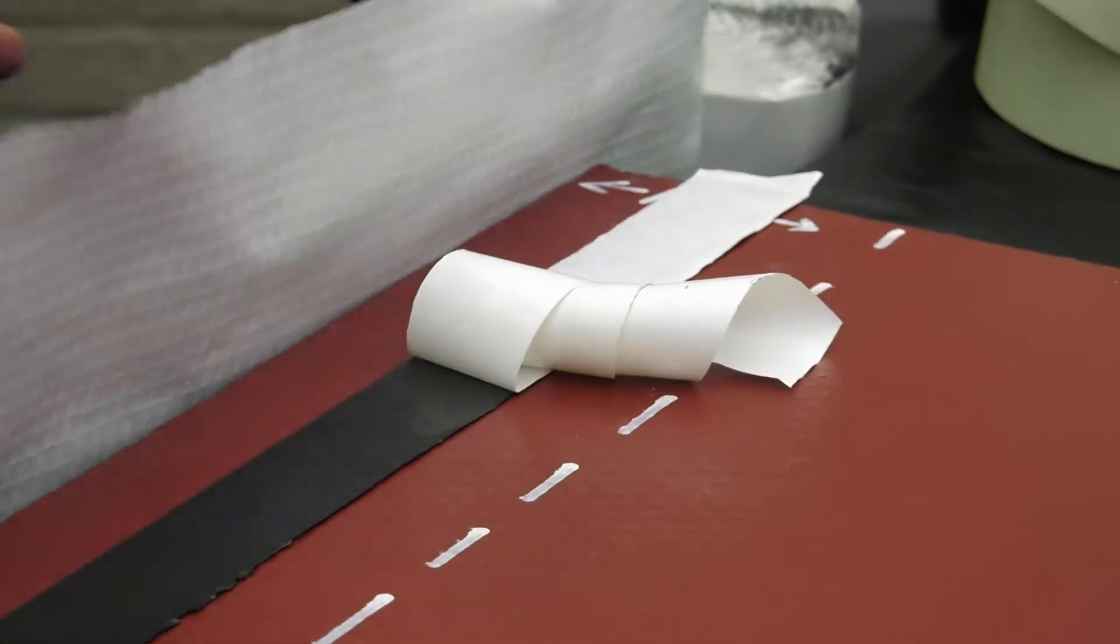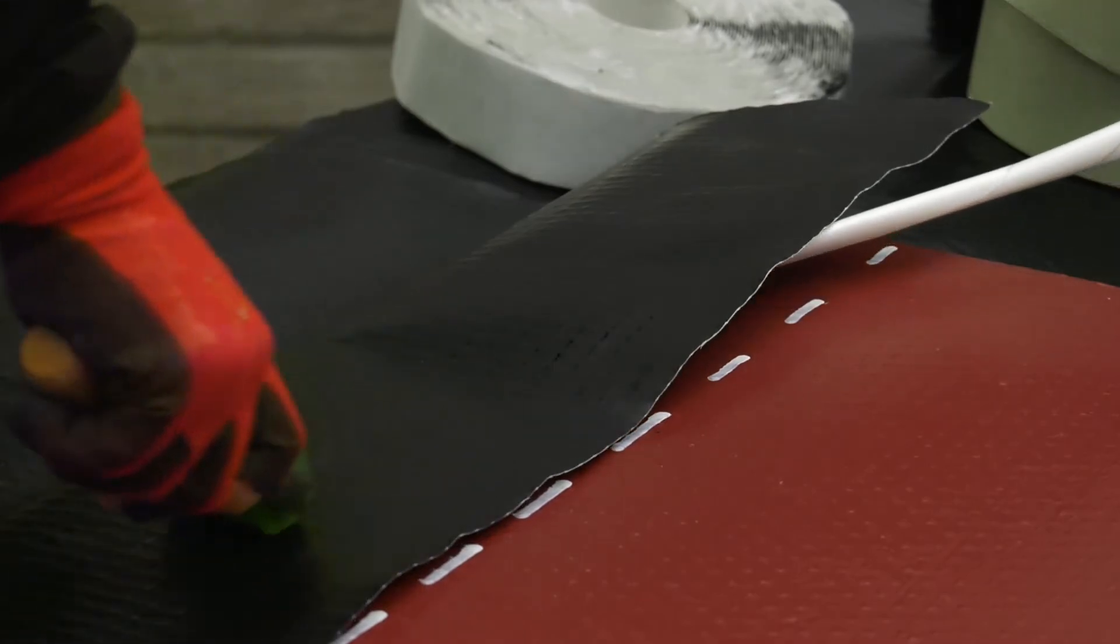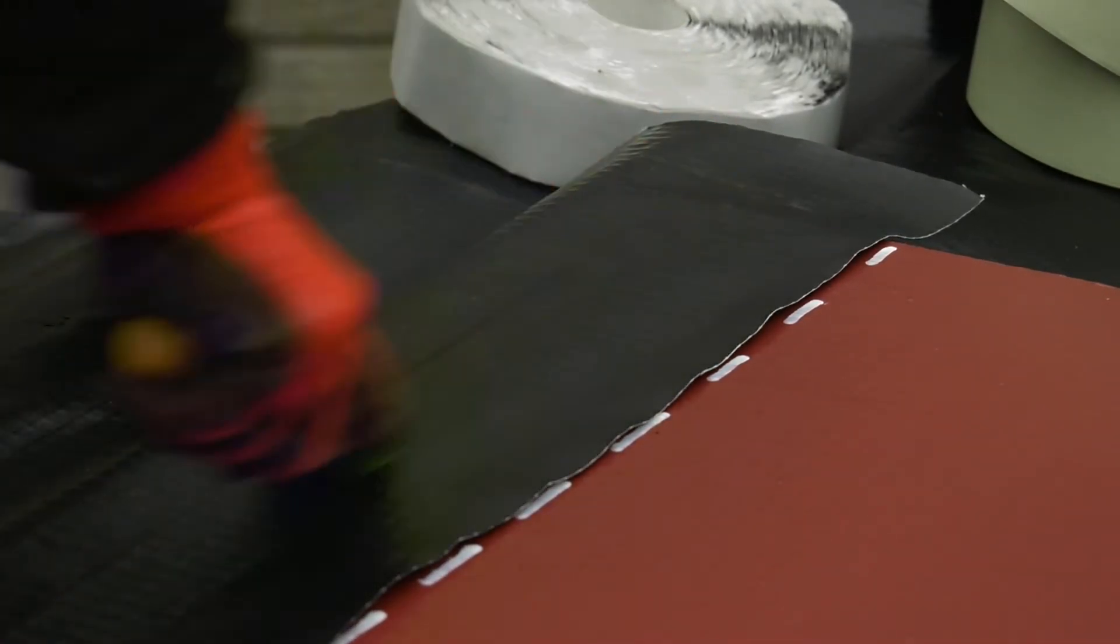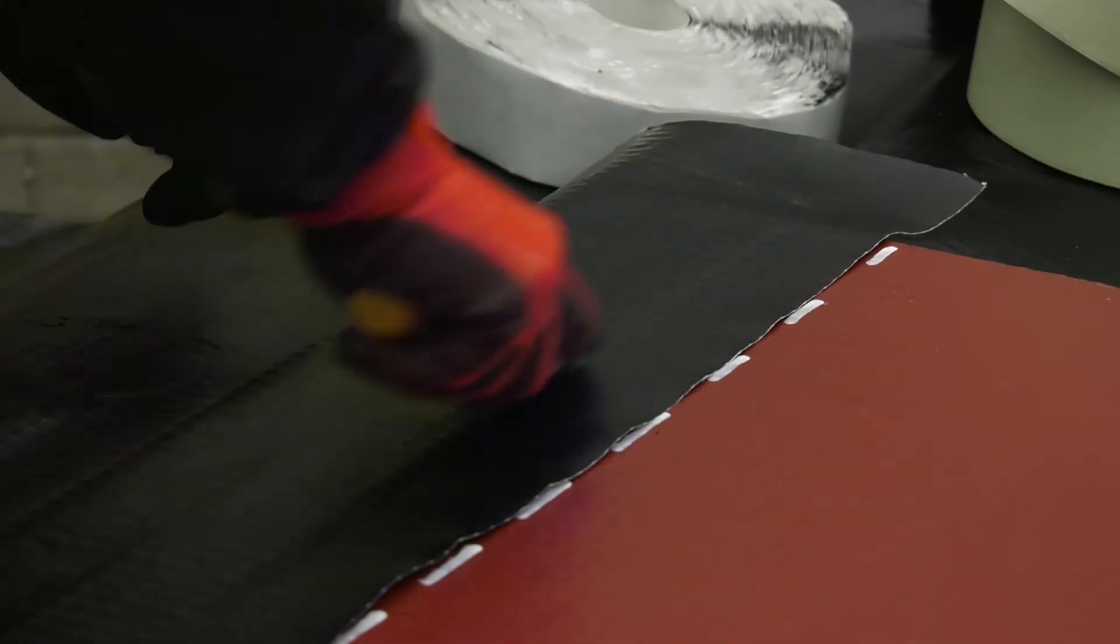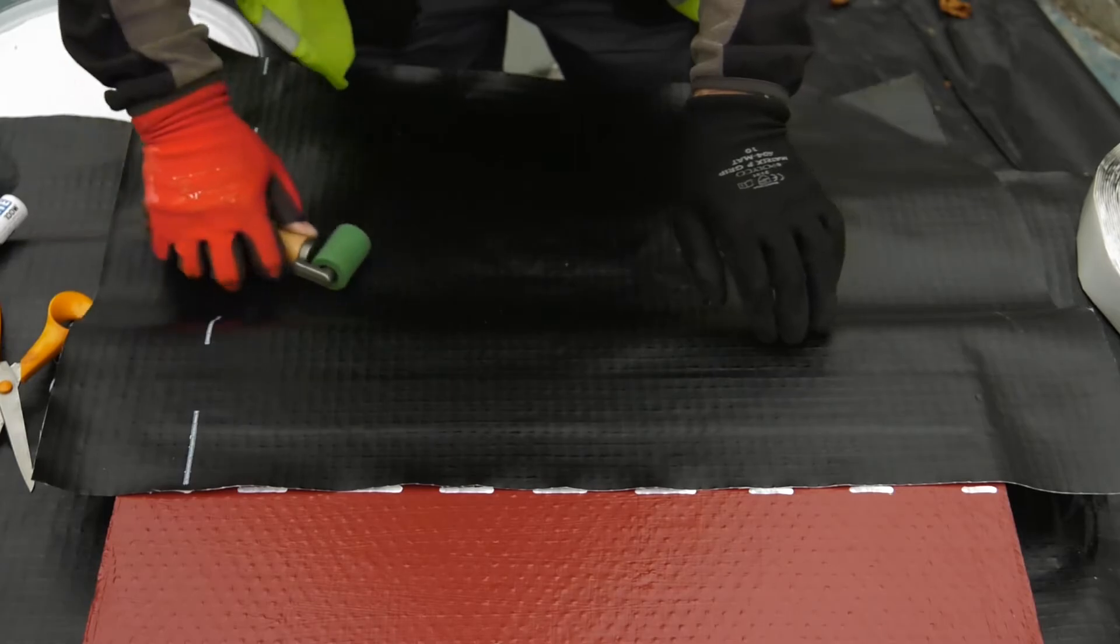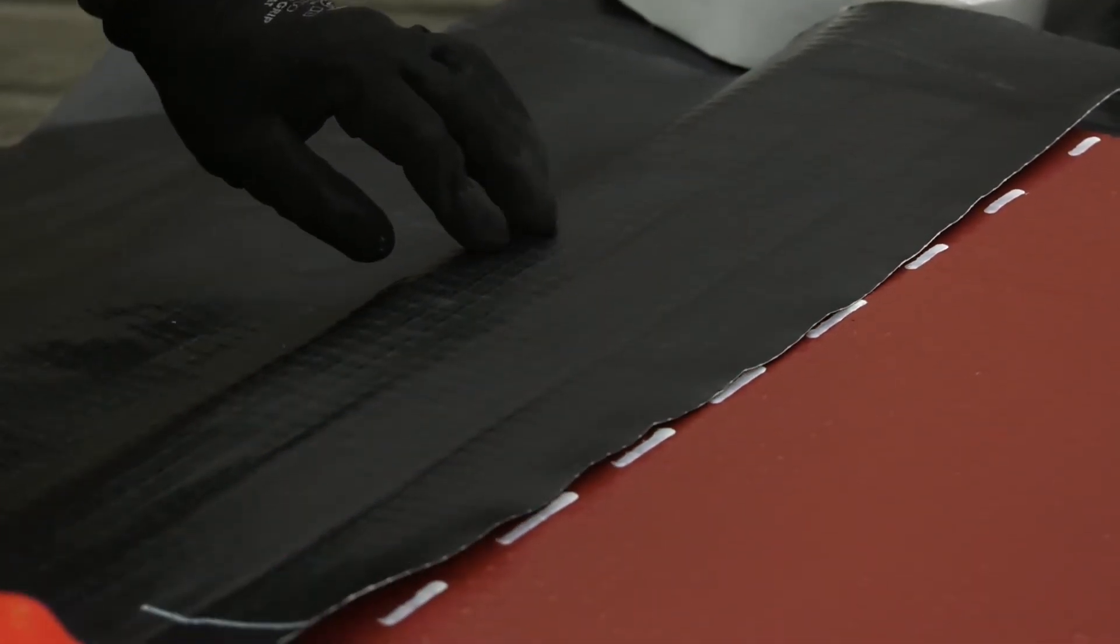Now, overlay the edge of the sheet membrane to the required minimum 100 millimetres overlap. Press firmly onto the sealing tape and then using a seam roller, firmly seal the membrane to the tape and LGB. Test the joint to ensure a good continuous seal.